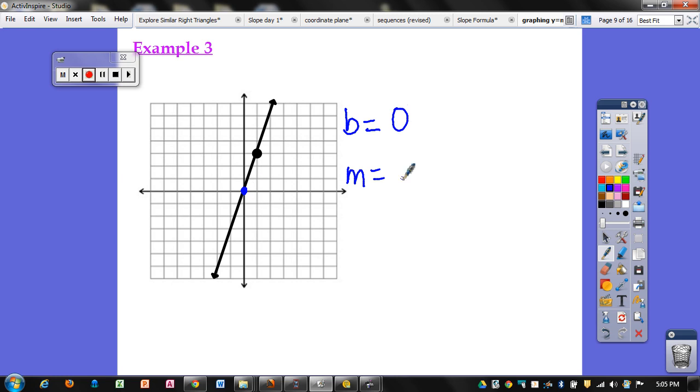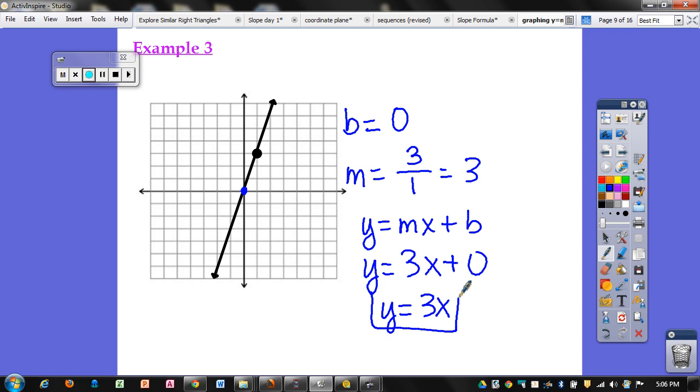And now I'm going to count my rise and my run. So to get to the next point, I'm going to count up 1, 2, 3. So positive 3. And my run is 1. So this simplifies to 3. Now I can plug this in. Instead of m, I have 3. So 3x. And then my b is 0 plus 0. You don't normally have to write plus 0. So you would just rewrite it as y equals 3x. And that's your equation for that graph.